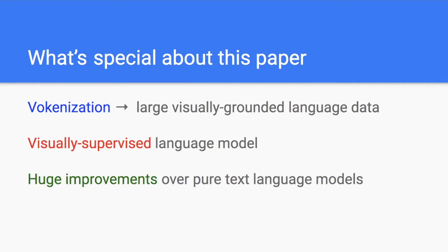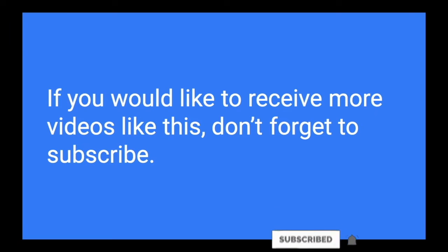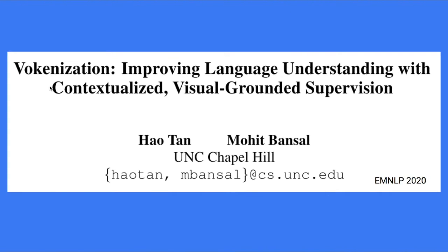The only thing you change is the learning signal in training time — you're not only learning with text, you also learn with visual grounding information. By the way, I make Deep Learning Explained videos every week, so if you would like to receive more relevant videos like this, don't forget to subscribe — your subscription is my best encouragement. This work is done by only two authors, Hao and Mohit, and it's accepted at EMNLP 2020.